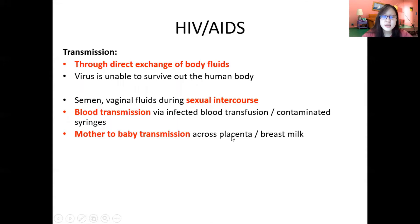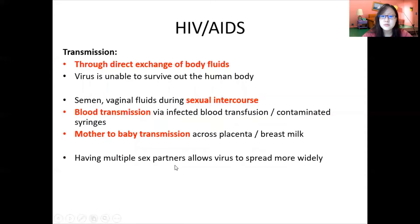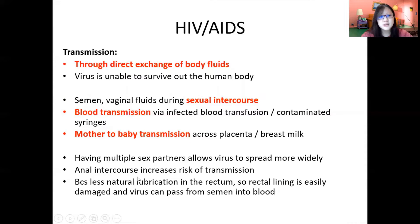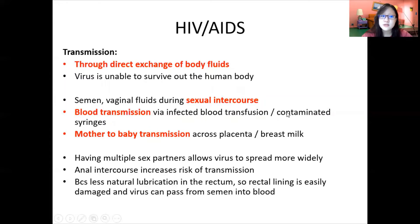Looking at these transmission routes, the high-risk groups are people with multiple sex partners and people who practice anal intercourse — because there is less lubrication in the rectum, it is easily damaged and the virus can pass from semen directly into blood, increasing the chances of HIV spreading. Drug users who share syringes are also in a high-risk group.